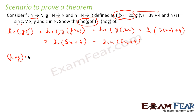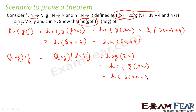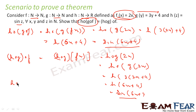Now taking the right side: (h∘g)∘f. This is h of g of f(x), which is h of g(2x), giving h of (3·2x + 4) = h of (6x + 4) = 7(6x + 4). If you see the LHS and RHS analysis, both are the same. Thus we can say that h∘(g∘f) equals (h∘g)∘f. Both are the same.